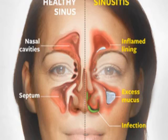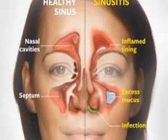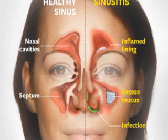For nasal decongestion, give ephedrine nasal drops. In adults, 1% — 1 to 2 drops into each nostril, up to 4 times daily when required. In children, 0.5% — 1 to 2 drops into each nostril, up to 4 times daily when required. Or neomycin 0.5% with hydrocortisone 1.5% nasal drops: in adults, 2 drops to each nostril; in children, 1 drop to each nostril.